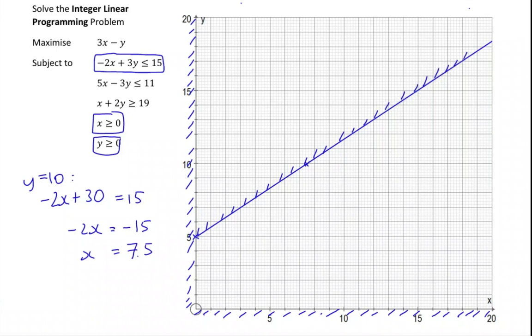We've got that line. Let's get rid of that, give ourselves a bit of space. So let's focus on 5x take away 3y is less than or equal to 11 now. I'm going to hit similar kind of problems with this one.